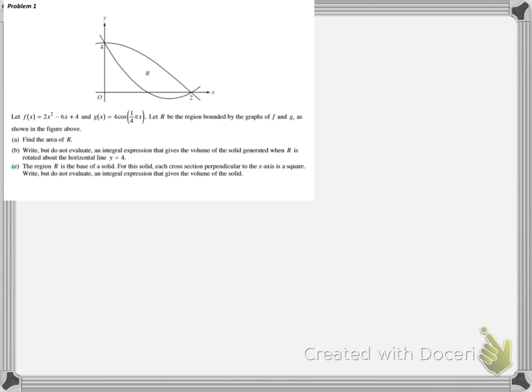Anyway, so it says the region R, which is that region up there, is the base of a solid. And for this solid, each cross section perpendicular to the x-axis. So it's saying that we're taking slices perpendicular to the x-axis.